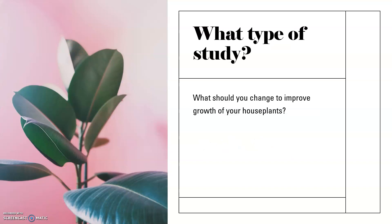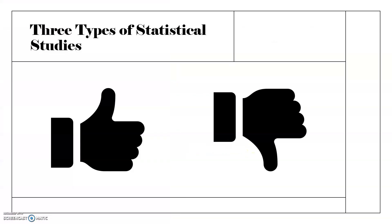What type of study should you use if you want to know what to change to improve the growth of your houseplants? If you want to be thorough, you would change one variable at a time for one group of houseplants and run an experiment so that you can see whether this change is helping your houseplants or not. Think about how confident you feel about the three different types of statistical studies.